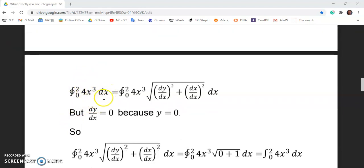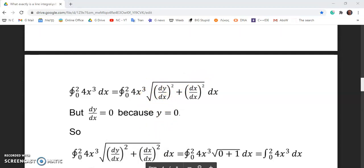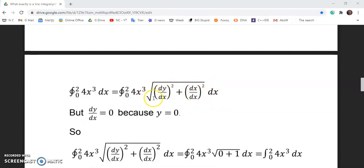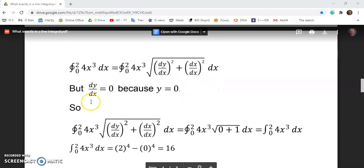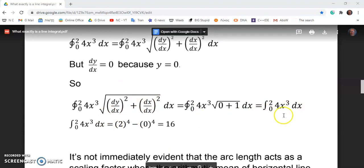And so to evaluate that integral, let's use the example of 4x cubed. And what you see here in this formula is a description of arc length. The square root of the first derivative of y with respect to x squared plus the derivative of x divided by itself squared. So this will always be one. And you'll normally see this as one plus dy over dx squared. So this expression here is arc length, but dy to dx is equal to zero because y is equal to zero.